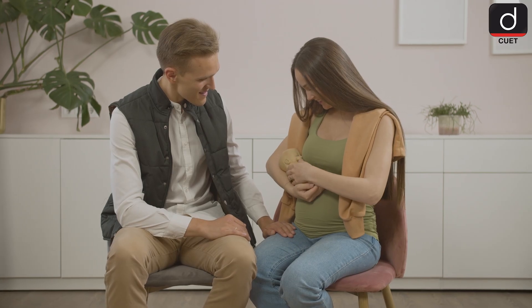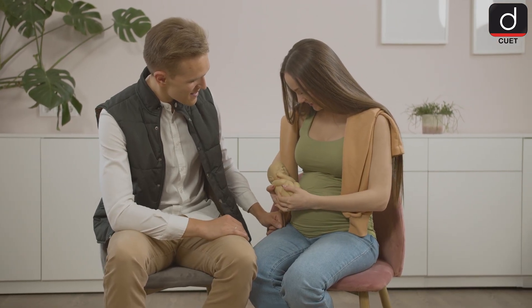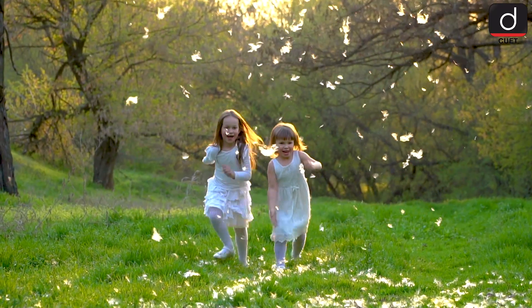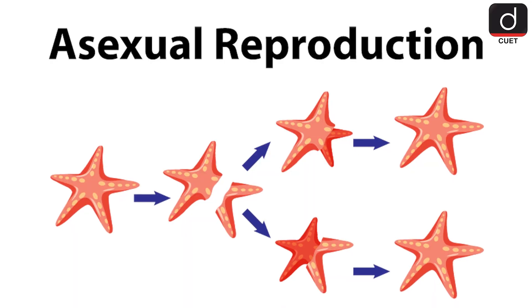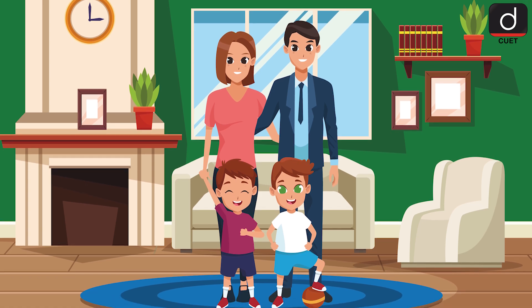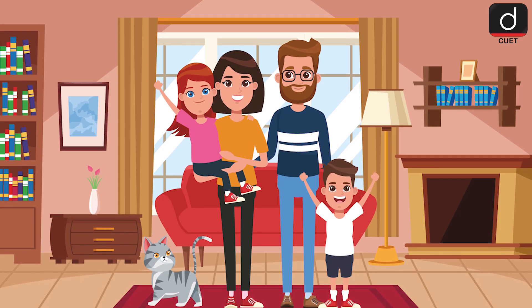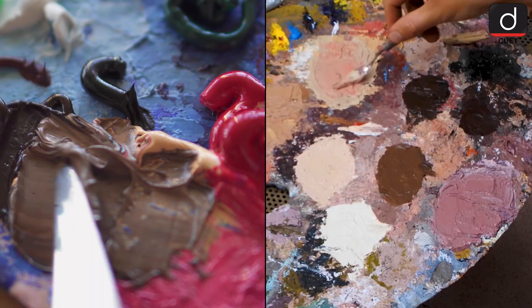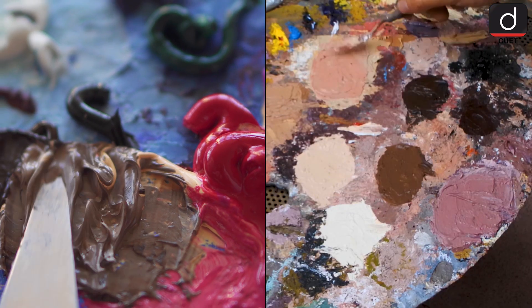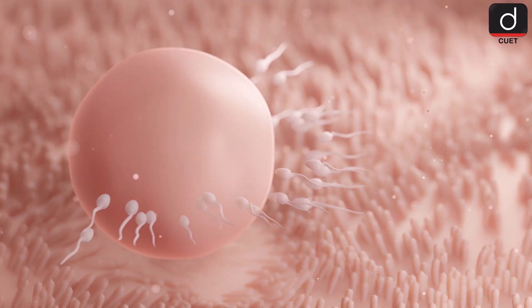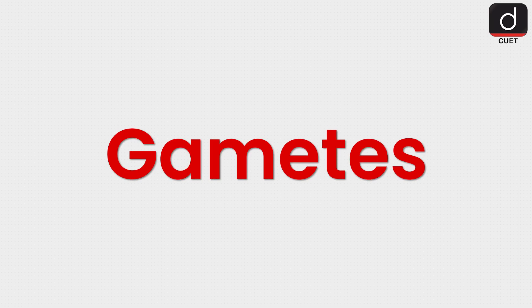Sexual reproduction is a fascinating and complex process that allows for diversity in life by combining the traits of two parents. It ensures that each new generation is unique and well suited to survive and thrive in its environment. Unlike asexual reproduction, where an organism can copy itself, sexual reproduction requires two parents, each contributing something special to create offspring that are a mix of both. Imagine it as two artists blending their paints to create a new color — each new creation is a little bit of both.